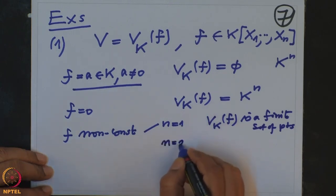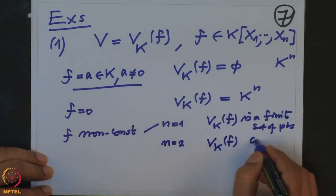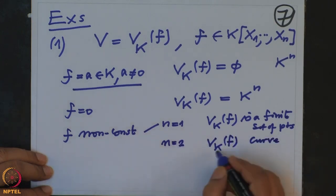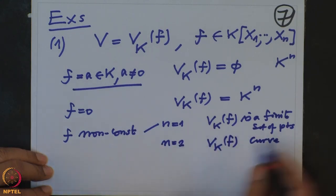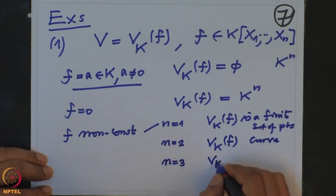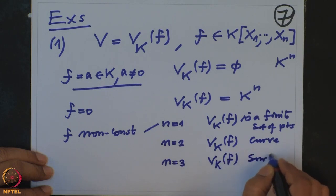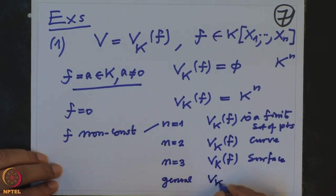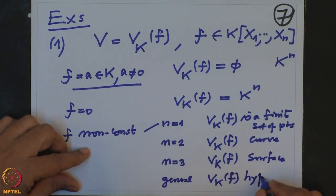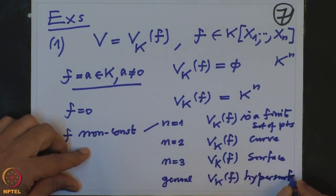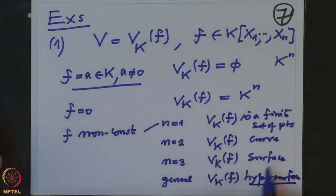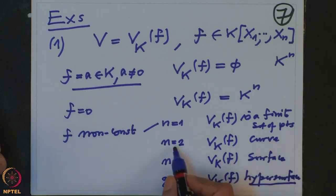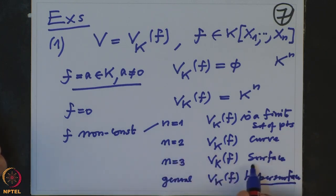If N=2, then V(K,F) is a curve. If N=3, then V(K,F) is a surface. In general, for general N, one calls V(K,F) a hypersurface — something defined by only one equation. You call it a surface or curve depending on whether N equals 3 or 2; if N=4 it will be called a 3-fold, and so on.